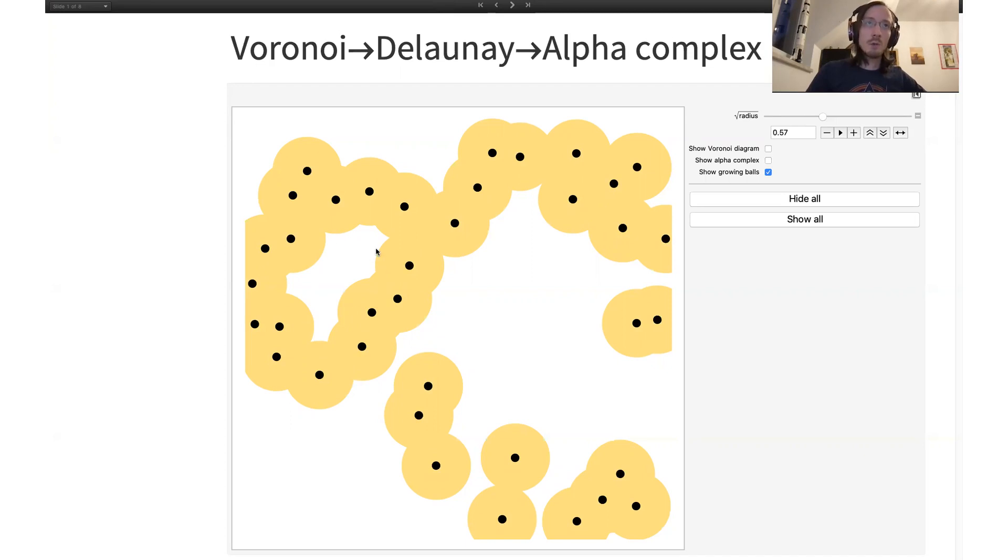So here you can see some region which is bounded by our shape. Now for different radii you get different information, and people study how those holes are created and when they disappear.